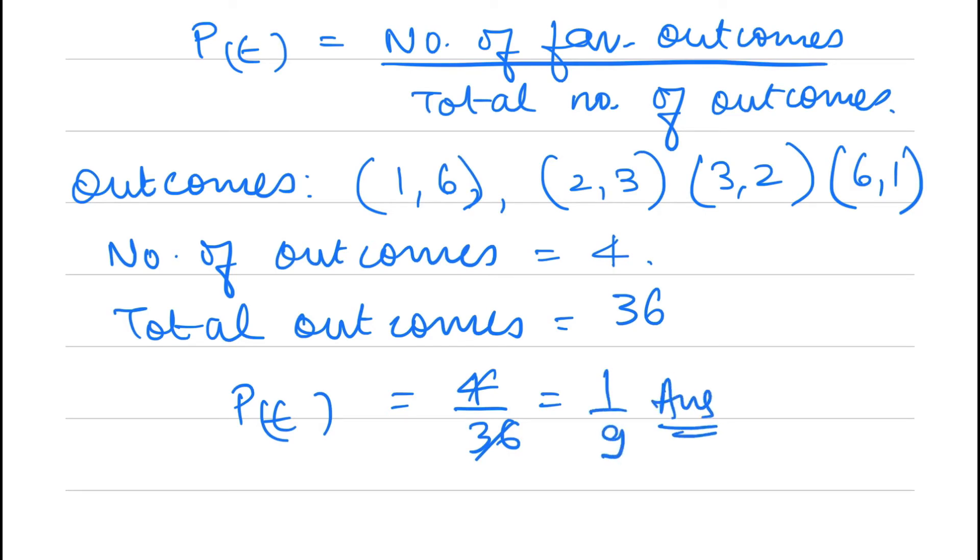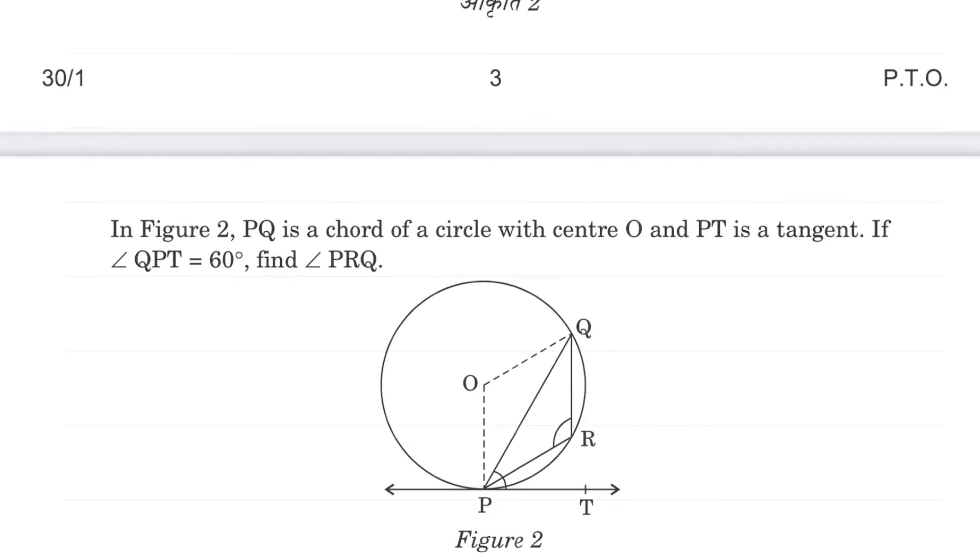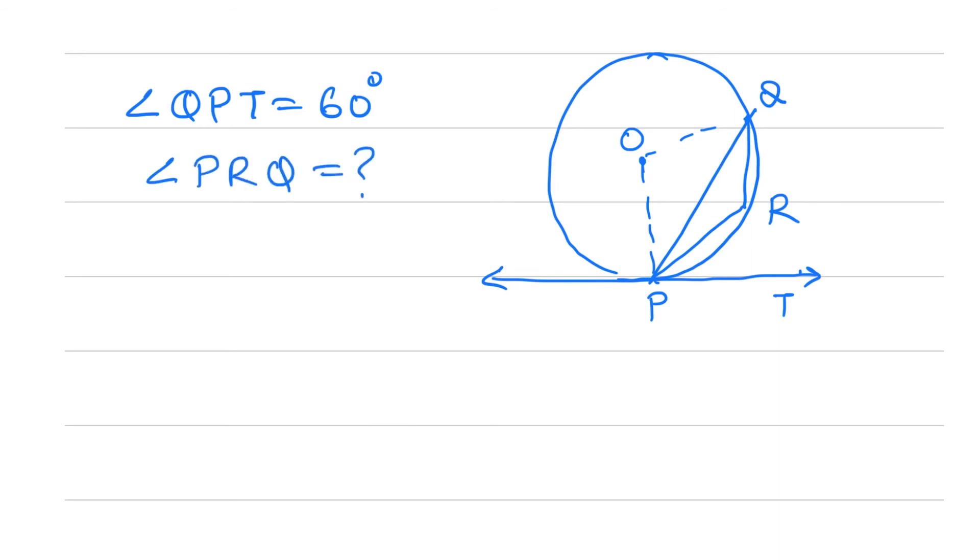Question 4: In this question we are given a circle with tangent PT, center O, and chord PQ. Point R is on the circle. We are given that angle QPT = 60°, and we have to find angle PRQ.